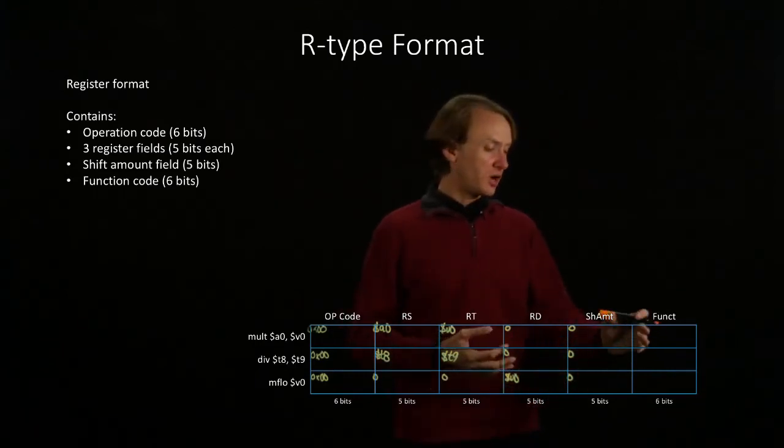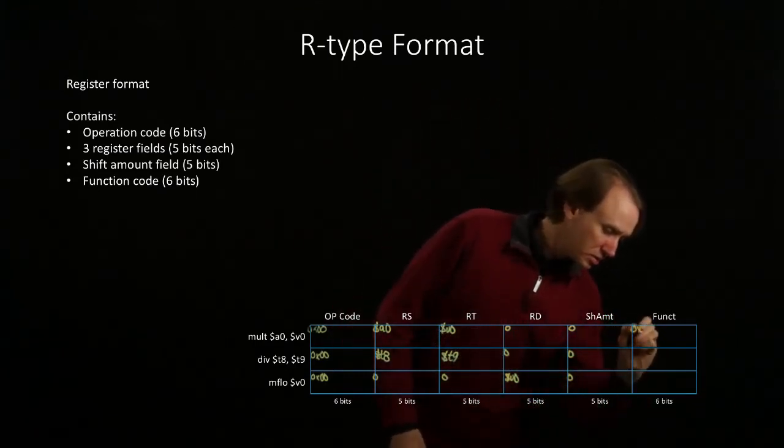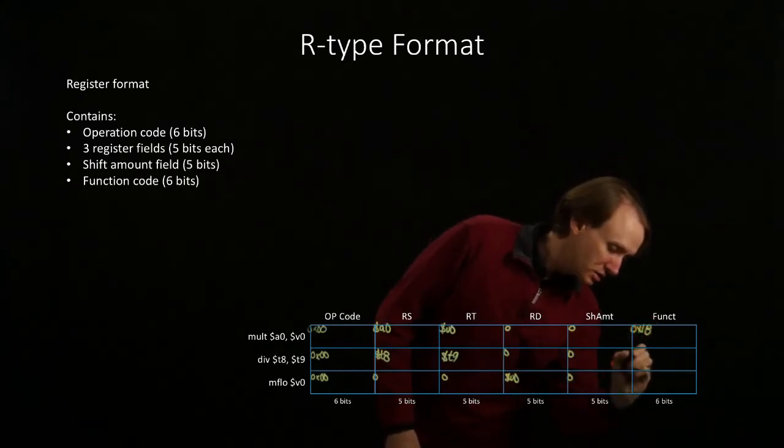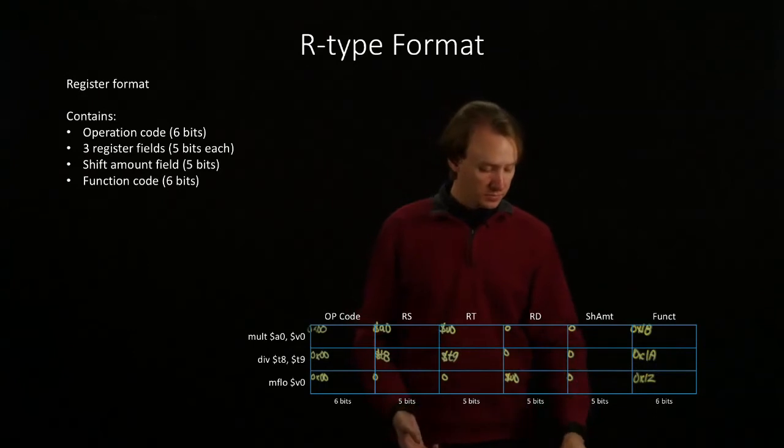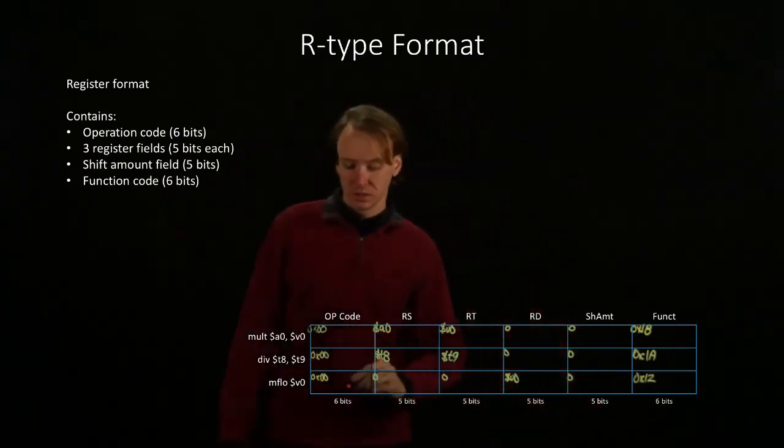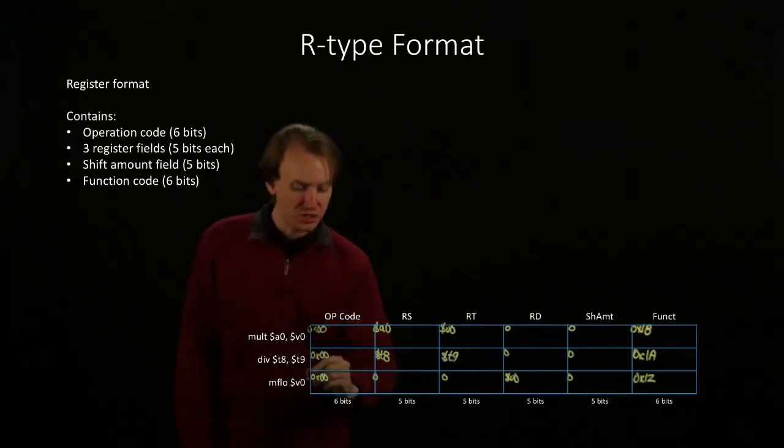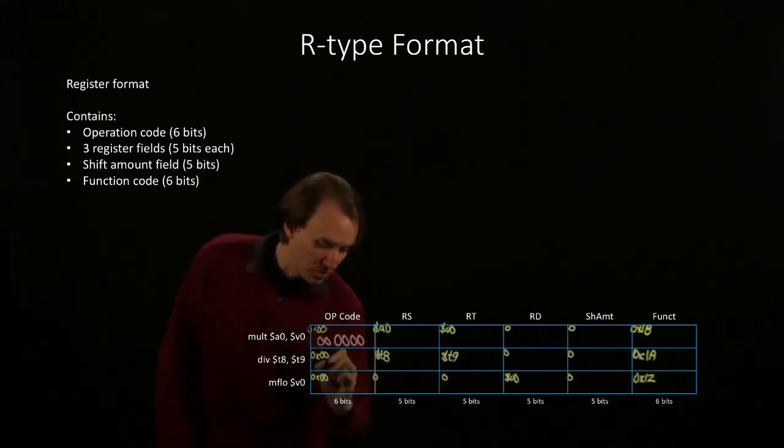Last thing we've got is the function field. And those will be 18, 1a, and 12 for those operations. I'll go ahead and convert those into binary. For all three instructions, we have six bits of zeros for the opcode.